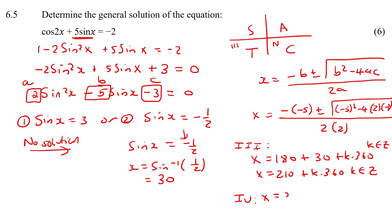For quadrant 4, we know that that's 360 minus the reference angle, plus k360, k element of z. So x would be 330 plus k360, k element of z.